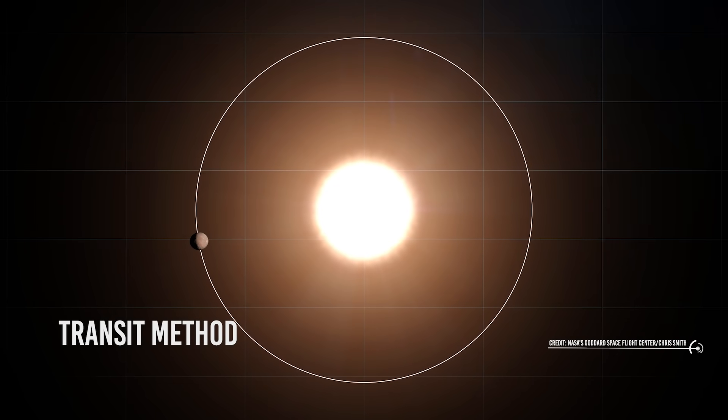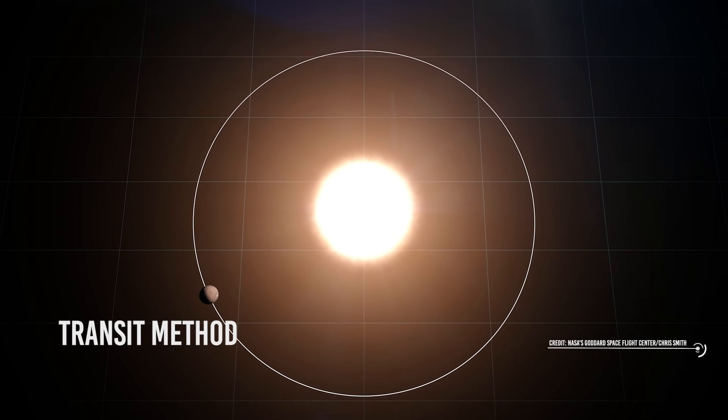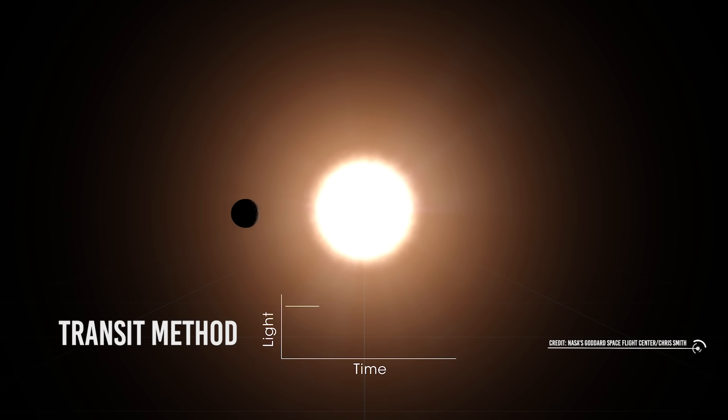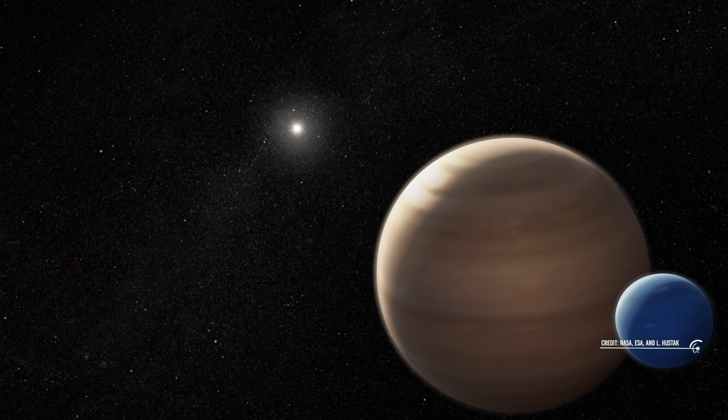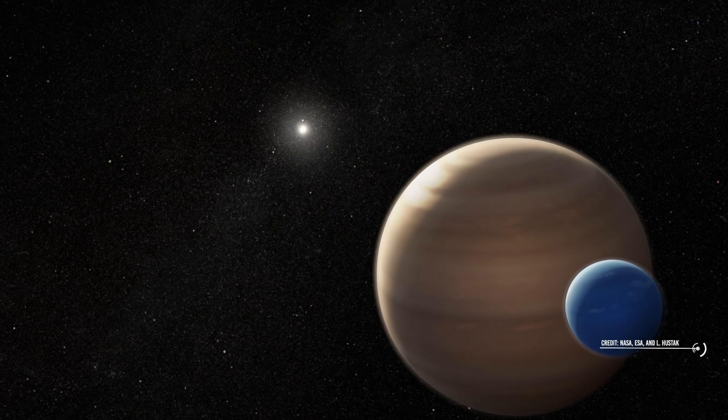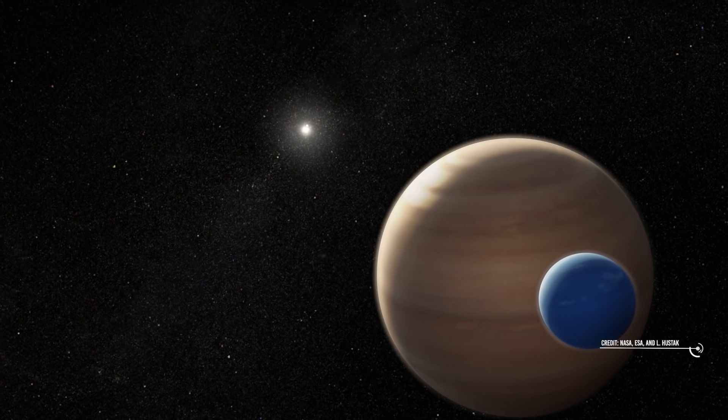Kipping's team also used the transit method to deduce the existence of a large moon the size of Neptune rotating around the gas giant Kepler-1625b, an exoplanet that itself revolves around a sun-like star 8,000 light-years from Earth. And all this thanks to the data bequeathed to us by the Kepler telescope, which was able to detect the slightest decrease in brightness in the light curve of a star when a planet passed in front of it, obscuring a small part of it.